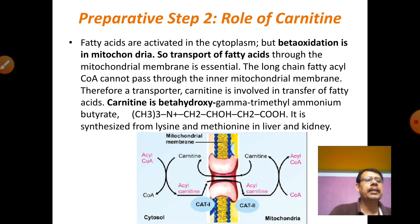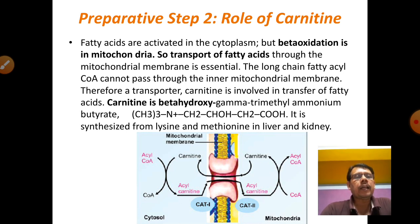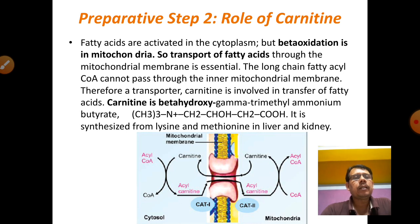The next step involves carnitine transport. Acyl-CoA cannot enter the mitochondrial membrane directly, yet beta oxidation occurs in the mitochondria. Therefore, a transport system using carnitine helps move acyl-CoA from the outer mitochondrial membrane to the inner mitochondrial membrane. Two enzymes are involved: carnitine acyltransferase I and carnitine acyltransferase II, which convey the acyl-CoA across the outer mitochondrial membrane to the inner mitochondrial membrane for beta oxidation.